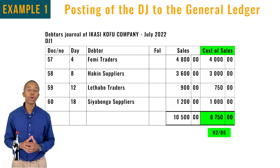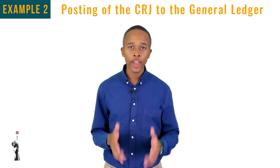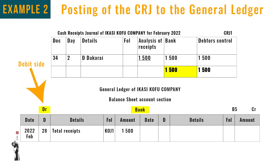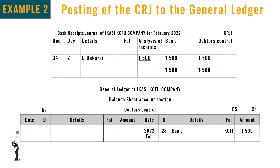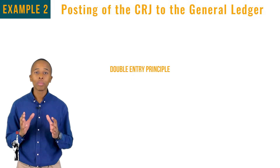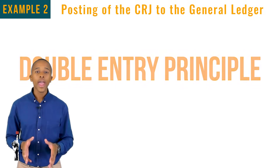Now let's look at the transaction where a debtor pays off his or her debt. Bank is debited with the amount of R1,500 because the business receives money and current assets increase on the debit side. Debtors control is credited with the amount of R1,500 because the debt of the debtors decreases as they are paying off their debt — current assets decrease on the credit side.